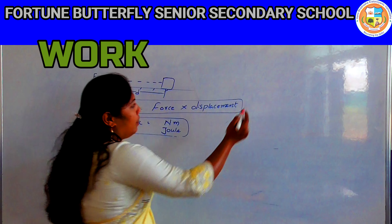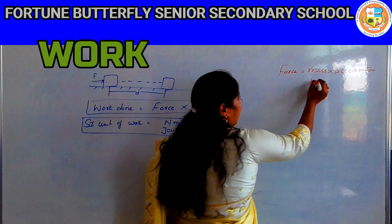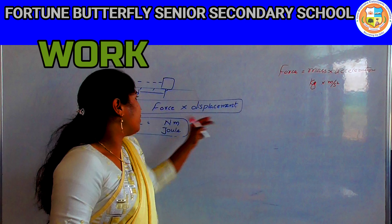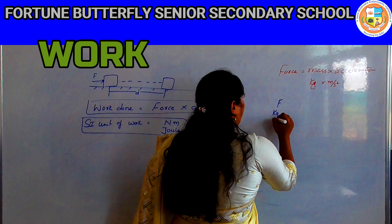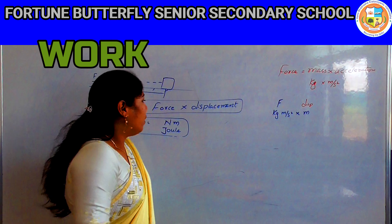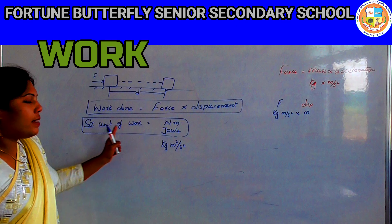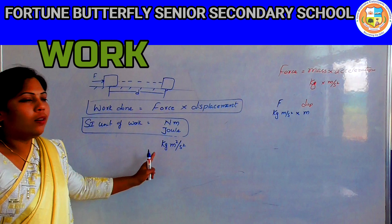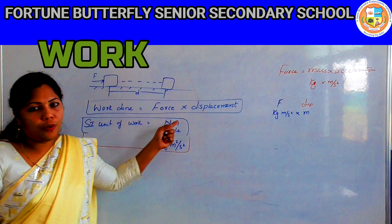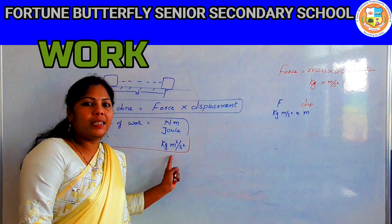We already know that force equals mass into acceleration. The SI unit of mass is kilograms and the SI unit of acceleration is meter per second squared. So force is kilogram-meter per second squared, and displacement is meters. Multiplying these gives us the SI unit of work as kilogram-meter squared per second squared. So the SI unit of work is Newton-meter, or Joule, or kg·m²/s².